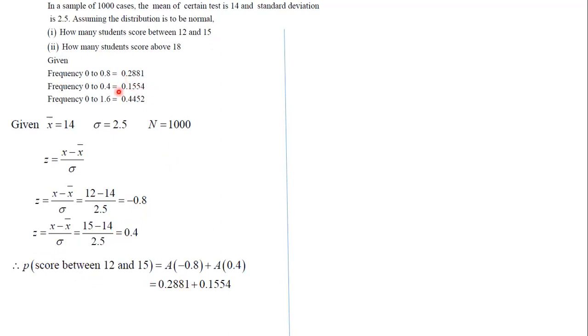Which is given to us in the question: 0.2881 and 0.1554. So this N times P, that will be the number of students. 1000 times 0.4435, so the number of students will be approximately 443.5 or 444.